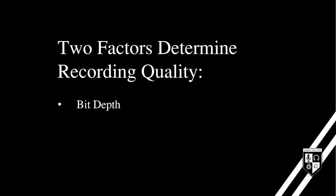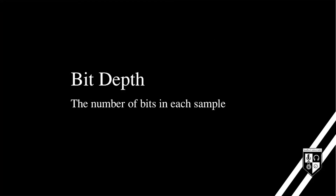The two main factors that determine the quality of digital recordings are bit depth and sample rate. Bit depth describes the number of bits used per sample. Each bit can represent two values — on or off — and each time you add a bit, you double the amount of possible values that that sample can represent.